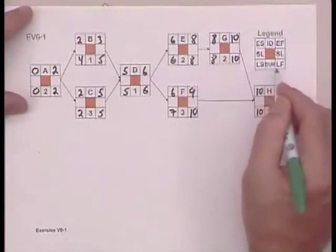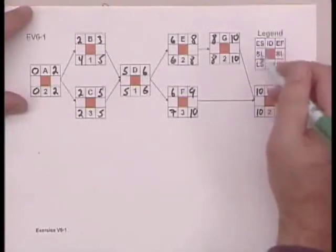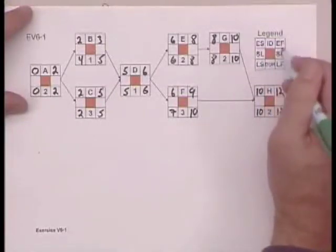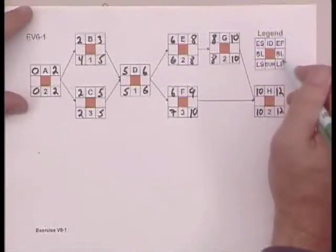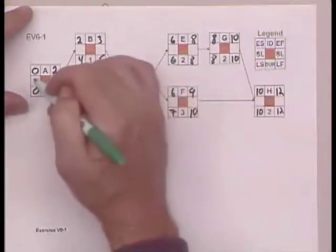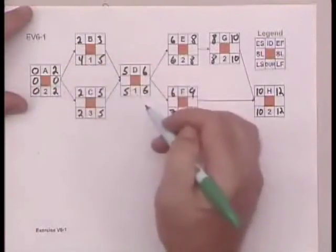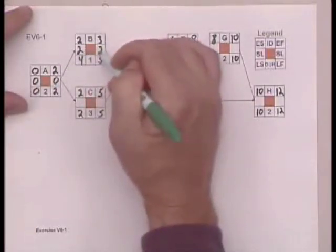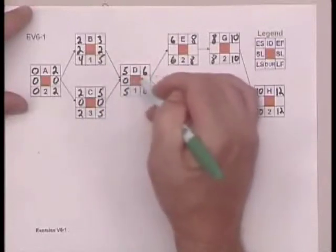So we've calculated the late start and the late finish, and now by subtracting early start from late start, early finish from late finish, we can determine the slack for a specific activity. That's 0, 2 from 4 is 2, 0, 0.